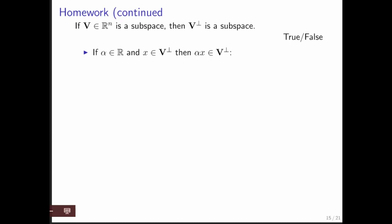We're not quite done. We also need to show that if you take an arbitrary scalar and an arbitrary vector x in V perp, then alpha times x is also in V perp. Again, take an arbitrary vector z in V. What we need to show is that alpha times x is perpendicular to z.